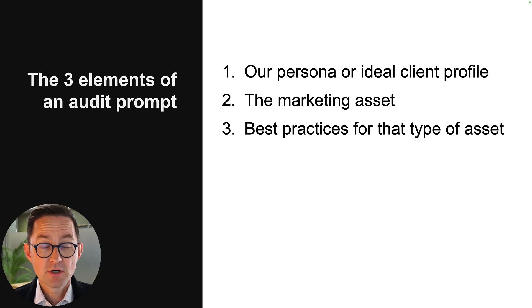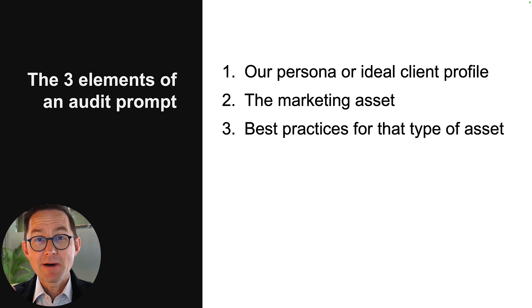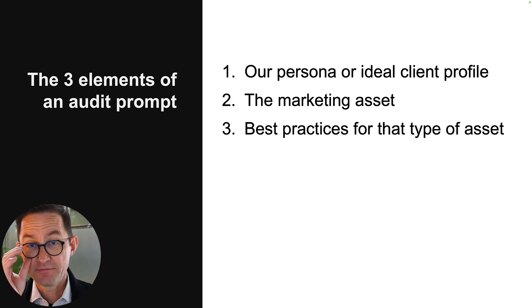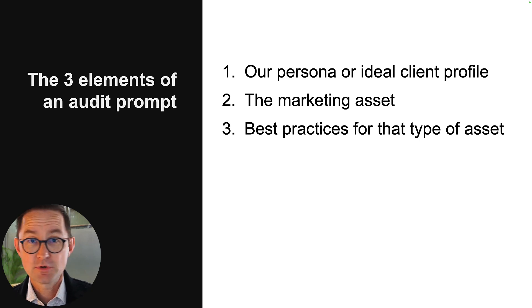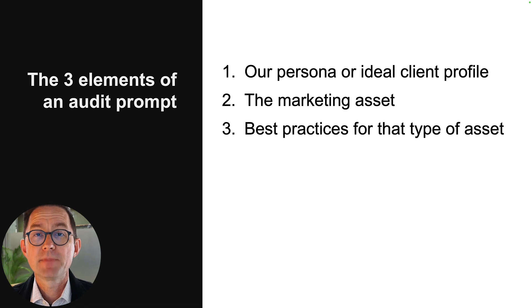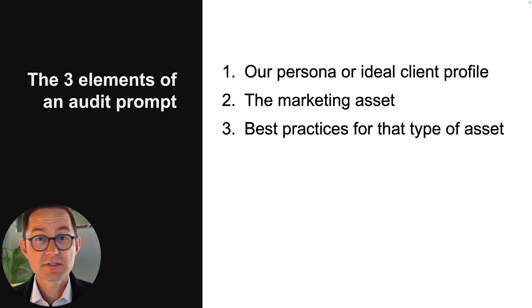It can actually review any of these things and give you a perspective. But the key is to give it a good prompt. The best audit prompts include three elements. First, the target persona or the ideal client profile — teach it about who you're talking to and it will do a much better job of making recommendations. The second, you give it the asset itself, probably uploading it if it's an image or copying and pasting if it's text. And third, a little set of best practices or success criteria for that type of asset. Do some research, look around, see what other people are saying. When we put these things together into an audit prompt, the AI may actually be able to give us some very useful insights and recommendations — perspectives we didn't have.